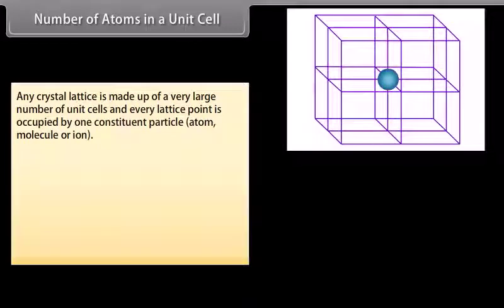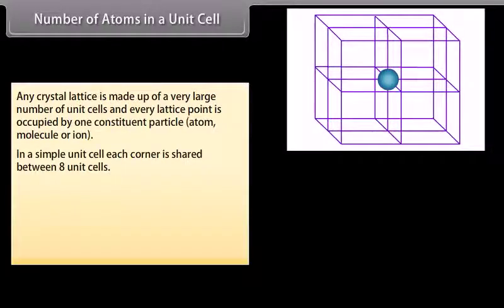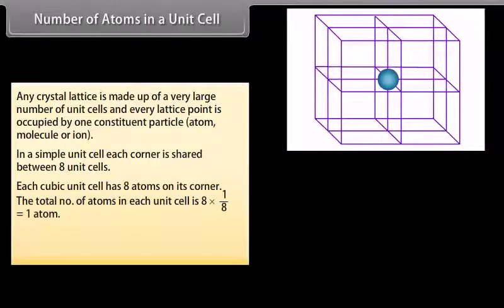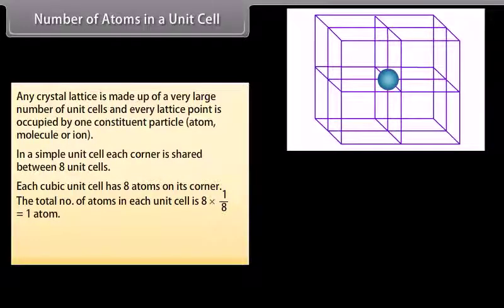Any crystal lattice is made up of a very large number of unit cells and every lattice point is occupied by one constituent particle — atom, molecule, or ion. In a simple unit cell, each corner is shared between 8 unit cells. Each cubic unit cell has 8 atoms on its corners. The total number of atoms in each unit cell is 8 × (1/8), which equals 1 atom.